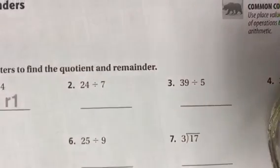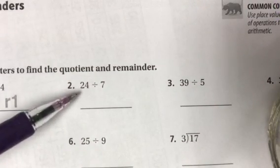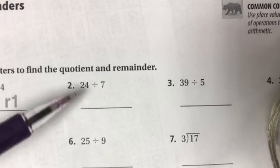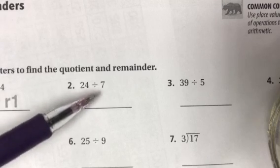We're going to do number 2, which is 24 divided by 7. I have a dividend of 24 divided by a divisor of 7. What that's asking us to do is to put 24 into groups that have 7 in each group.